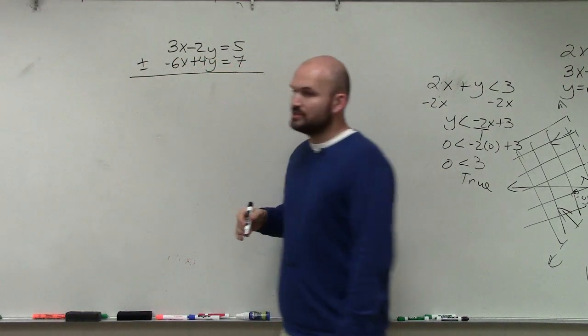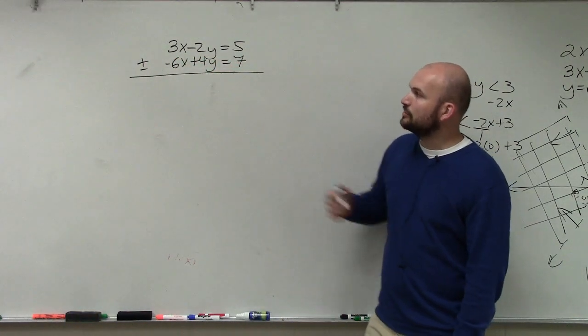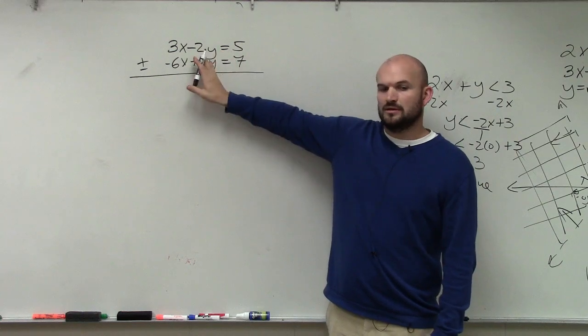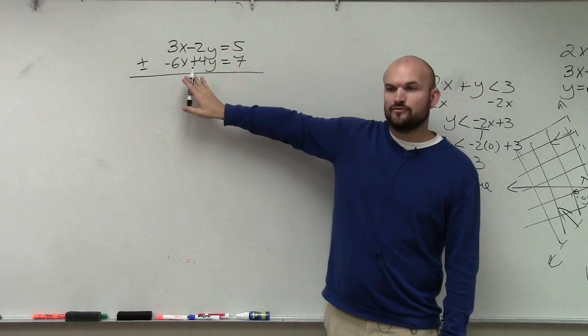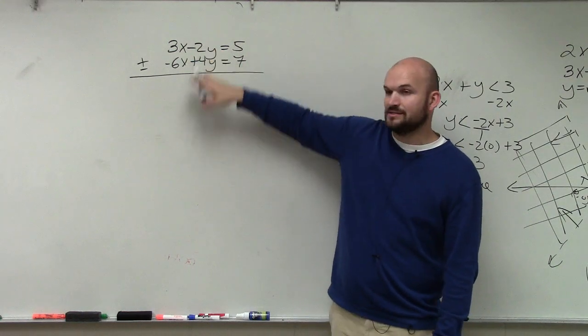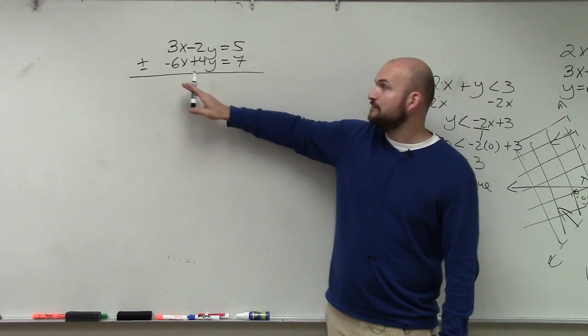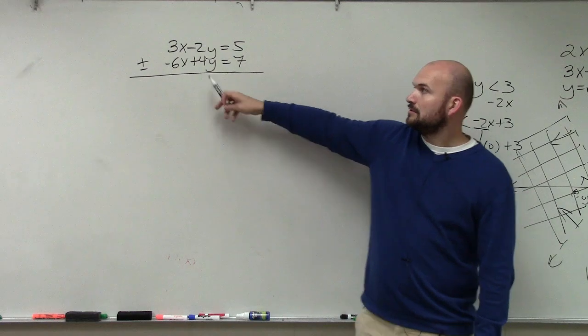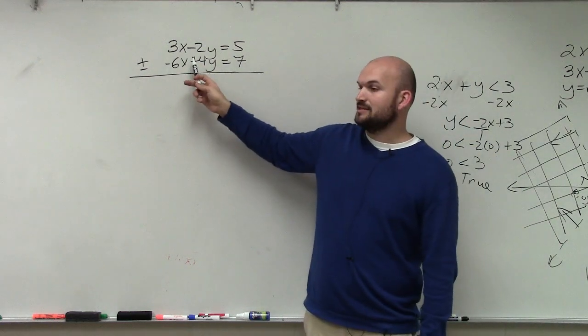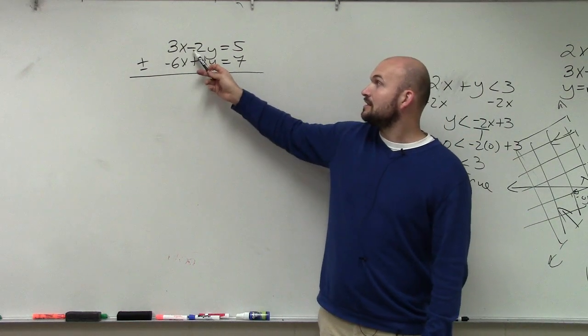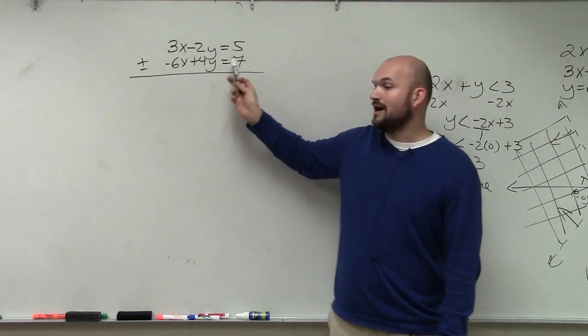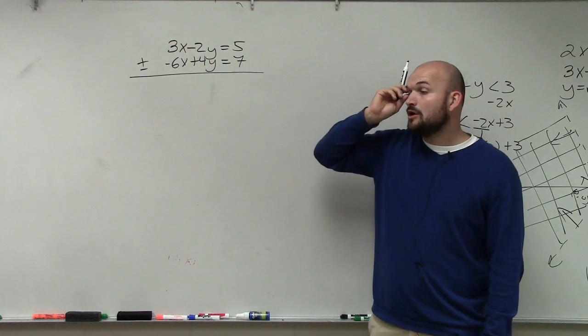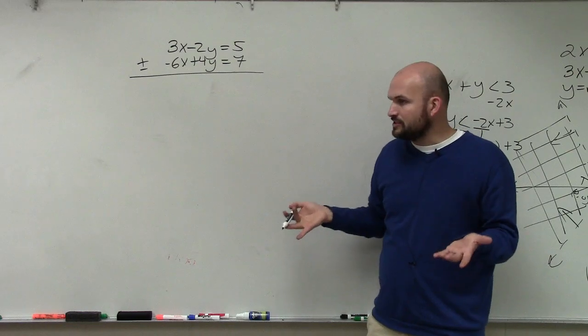Now, I'm just going to do this kind of in my head. If you guys look at these two equations, if you add these two equations, are you going to get a coefficient of 0 for either x or for y if you add these up? No. If you subtract them, will you get a coefficient of 0? Well, 3x minus 6x is positive 9x. Negative 2y minus 4y is going to be negative 6y. So even if we add or subtract, we're always going to have a number as a coefficient.